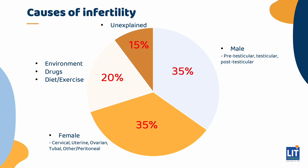When you read about female causes, they are called things like cervical factor, uterine factor, ovarian factor, tubal factor, etc. It's thought that 20% of infertility may be caused by things that affect both genders equally, like drugs, environmental exposures, and the deleterious effects of insufficient or excessive diet and exercise. And about 10% of infertile couples are ultimately diagnosed with unexplained infertility when all causes have been ruled out — it is a diagnosis of exclusion.